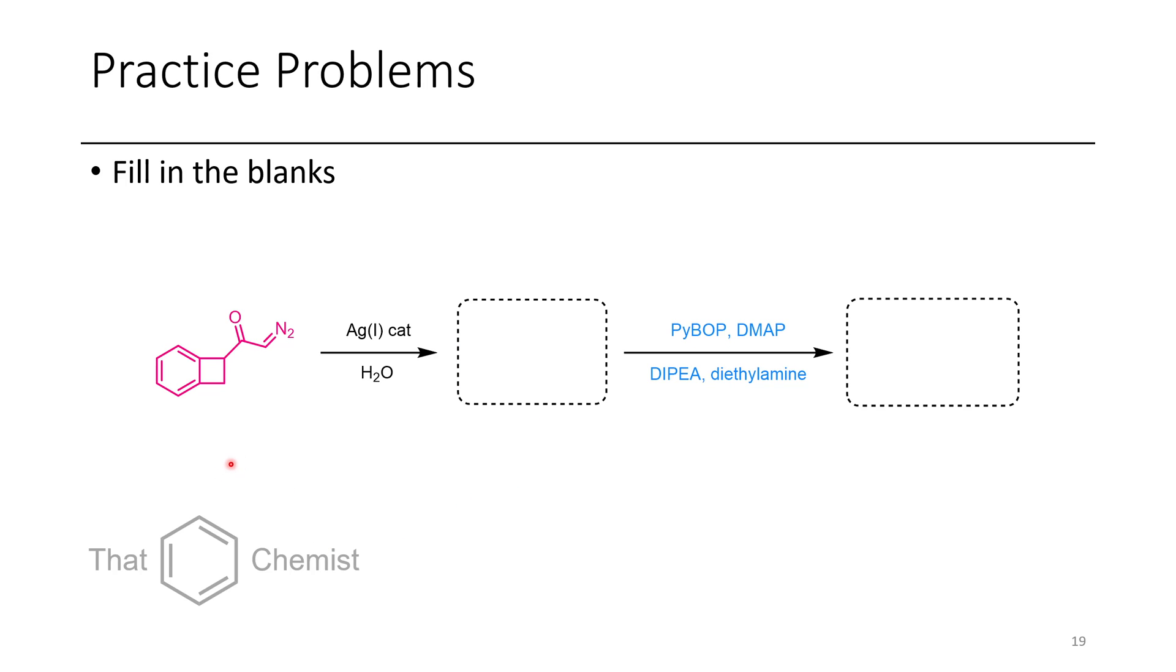Now in this next problem, I want you to show what would occur if you treated this alpha-diazo ketone with silver, and then you treated that product with PyBOP, DMAP, diisopropylethylamine, and diethylamine.